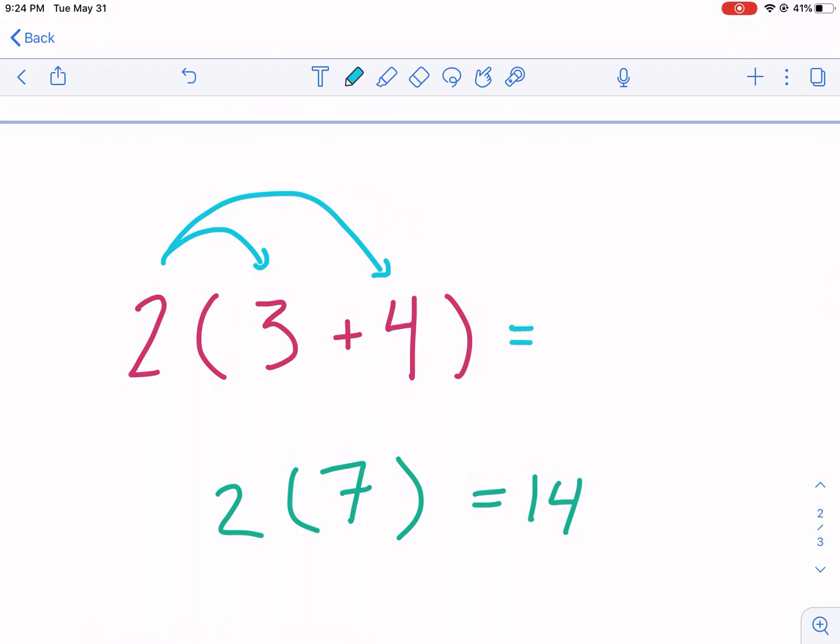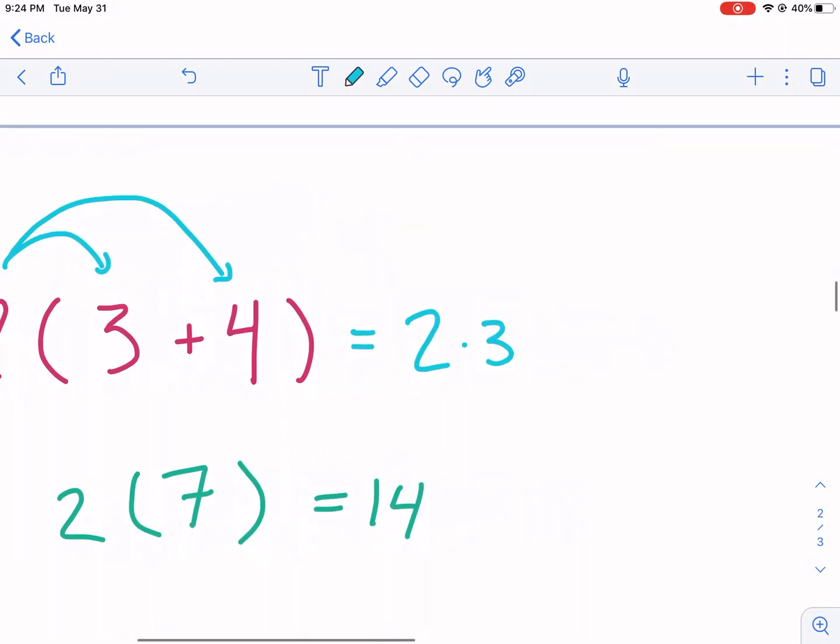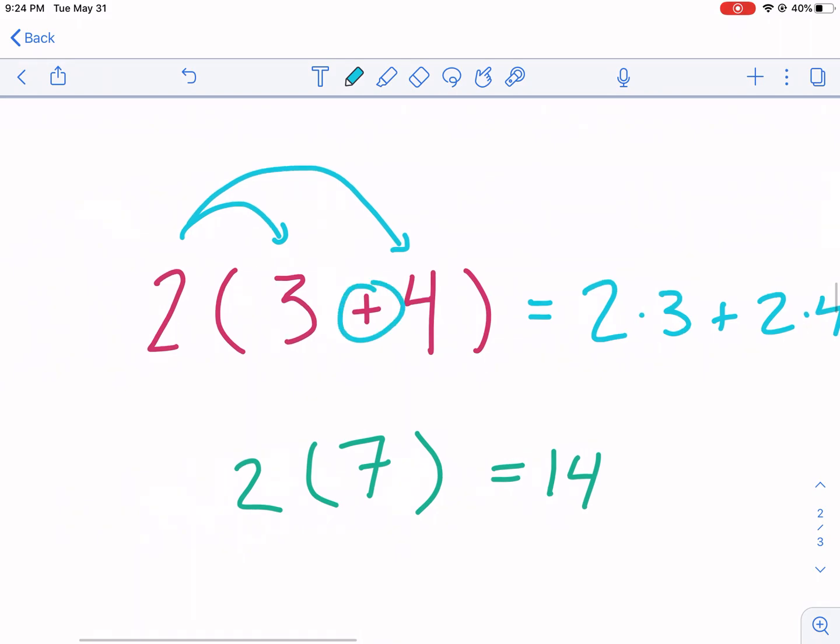You can call it speed dating, so the 2 gets paired up with 3 and also the 4. He's got to date everyone inside the parentheses. I'll refer to that later. But essentially what we're doing here is we're doing 2 times 3 and then also 2 times 4. And we're going to add these together because these are all positive.